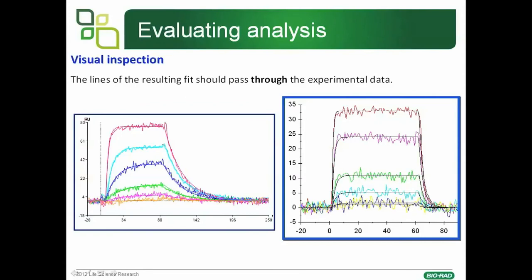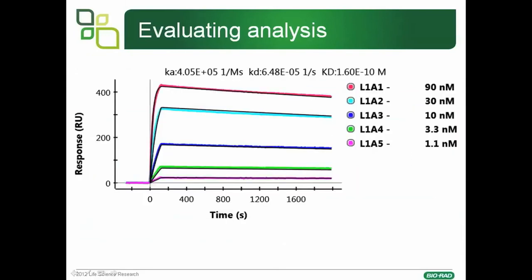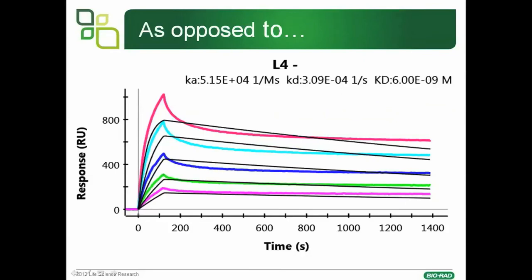Having done all that, the next thing to do is a visual inspection. Do your fit lines pass through the experimental data — in other words, do they pass through the middle of any noise? On the left-hand side, when you've got relatively slow dissociation, and on the right-hand side when you have faster on and faster off, the fit lines should still pass through the middle of the data. In our continued example, you can see that the fit lines pass broadly through the middle of the data with no systematic deviations. As opposed to this example here, where clearly the fit lines do not pass through the middle of the data sets — this would be described as a poor fit visually.